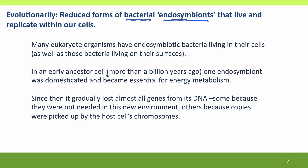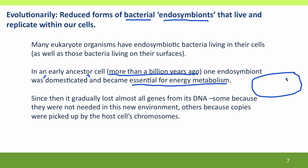In an early ancestor cell, more than a billion years ago, one such endosymbiont became domesticated — it became an essential and welcome part of the cell, and in particular it became essential for energy metabolism. Since then, this protomitochondrium, which would have been at the beginning very much like a typical bacterium with a chromosome that might have had several thousand genes, has gradually lost almost all the genes from its DNA — partly because it didn't need them in its new environment, and partly because they became integrated into the host cell's chromosomes.